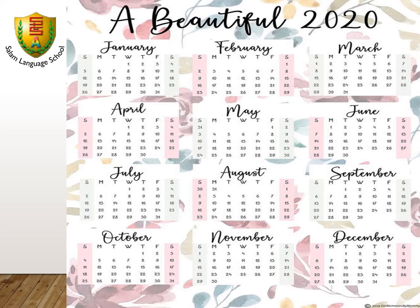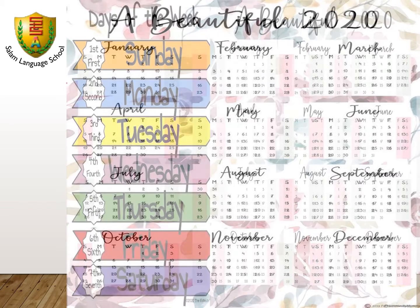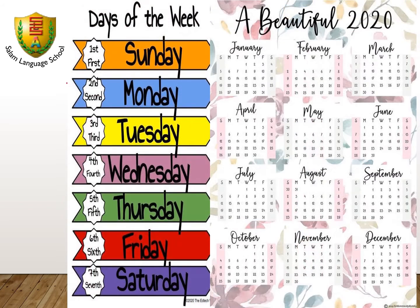A calendar also helps us to know special days, like first days and holidays. We have 7 days in a week, and we have 12 months in a year.